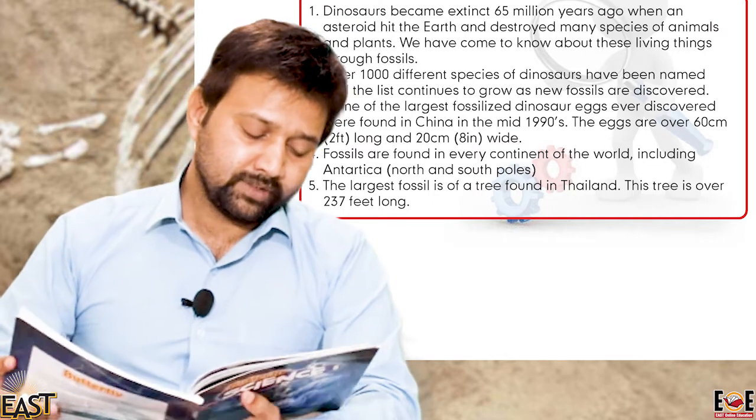Those were the interesting facts about dinosaurs, and the largest tree fossil was discovered in Thailand. Your home assignment is: first, read page number 30 and complete the reading. Second, as we know that 1,000 different species of dinosaurs have been named, you have to do internet research and write at least 20 different species names of dinosaurs, and send this assignment to your teacher.